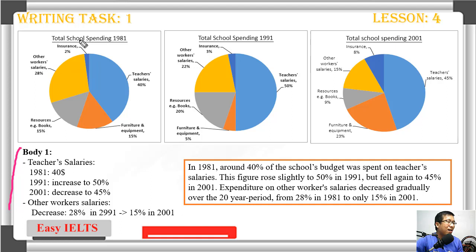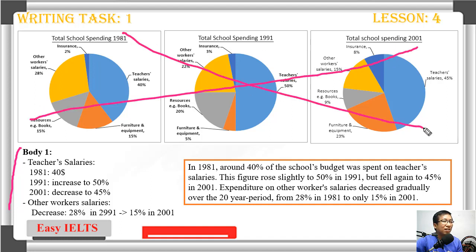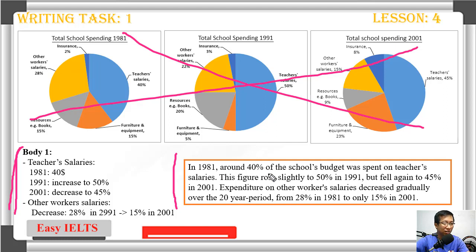Now we are going to write body one. When you write down the layout, you already have the sentences in your head — you just write from your ideas. 'In 1981, around 40 percent of school expenditure was spent on teacher salary.' Then we say: 'This figure rose slightly to 50 percent in 1991, but fell again to 45 percent in 2001.'